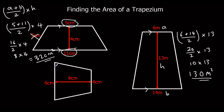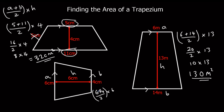Finally here, the shape is kind of twisted around. The two parallel sides are these two — the two running in the same direction. So we call those A and B, and this one is H. So it's six plus four over two, times six. Six plus four is ten, half of ten is five. Five times six is thirty centimetres squared.